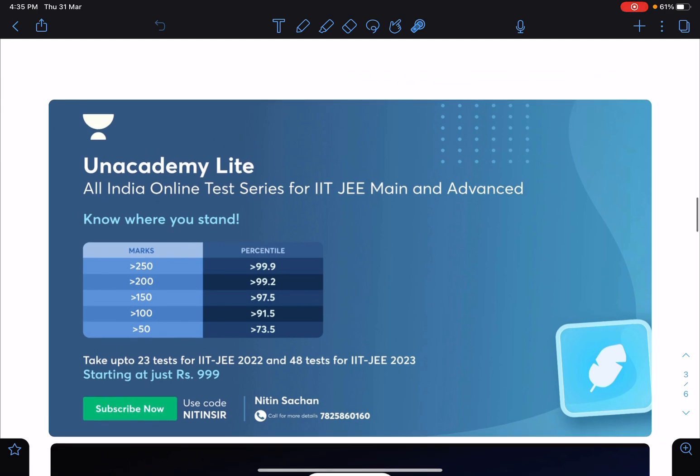There is All India Online Test Series for JEE Mains and Advance going on and you can know your score and based on your score you can know your expected percentile. You can write 23 tests for JEE 2022 and 48 tests for 2023 and it is just starting at a very low price. In order to join this you can use my code Nitansar and for more details you can call on this number.